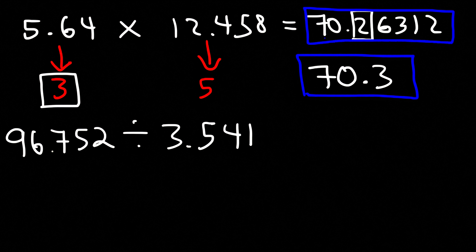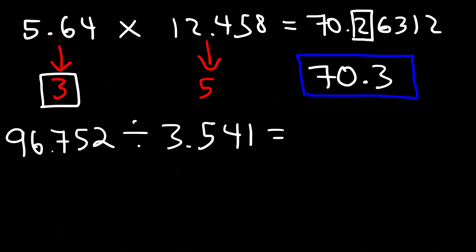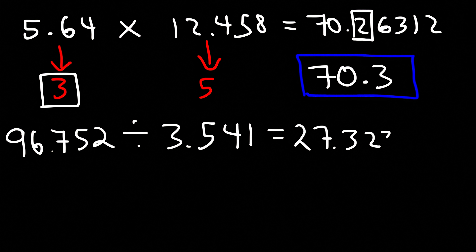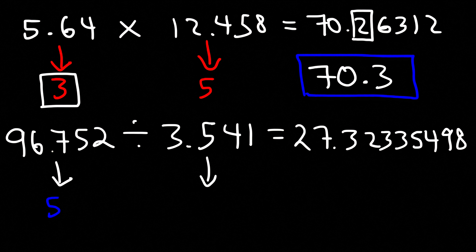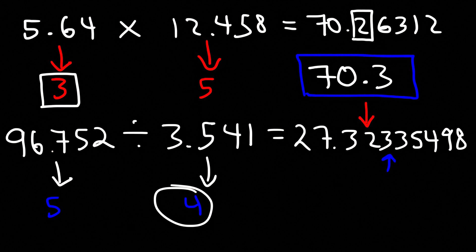For 96.752 divided by 3.541, the calculator gives 27.32335498. The first number has 5 significant figures and the second has 4, so we round to 4 significant figures. Looking at the fourth digit, the next number is less than 5, so we keep the 2. Our final answer is 27.32.